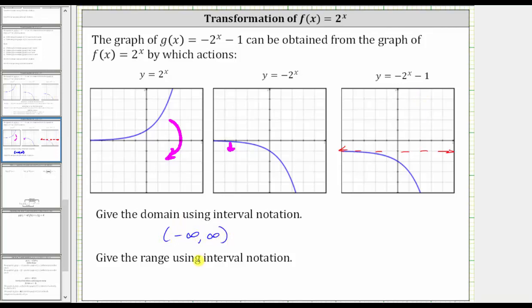Graphically, we can tell the domain is all reals because the graph goes left and right indefinitely without any holes or breaks.